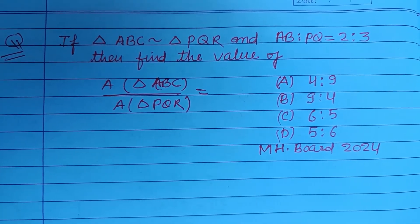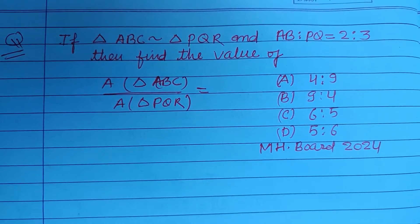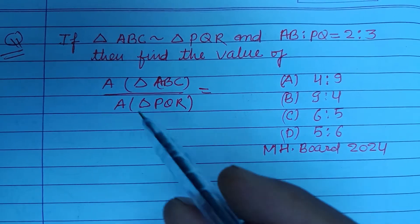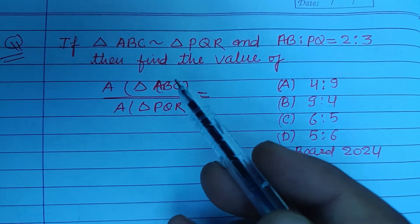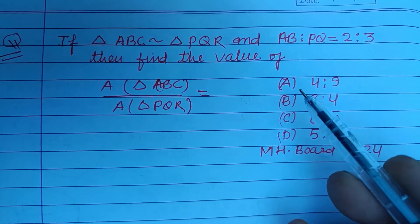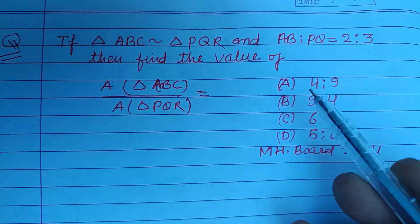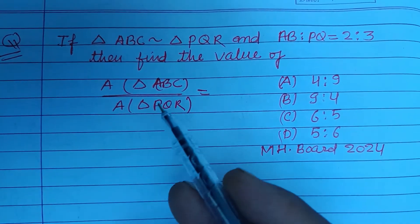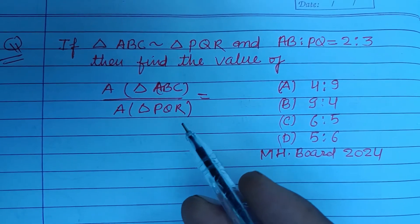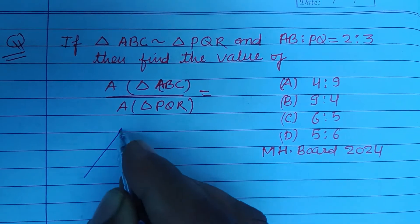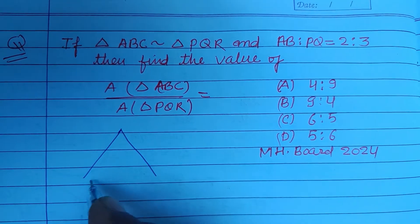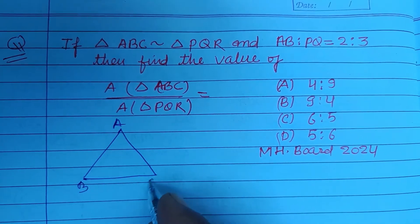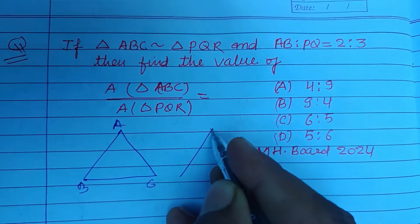Hello viewers, warm welcome to this YouTube channel. This is a question from Maharashtra State Board 2024. If triangle ABC is similar to triangle PQR and AB to PQ is given as 2 ratio 3, then find the value of area of triangle ABC upon area of triangle PQR. Here we have two triangles: ABC and PQR.